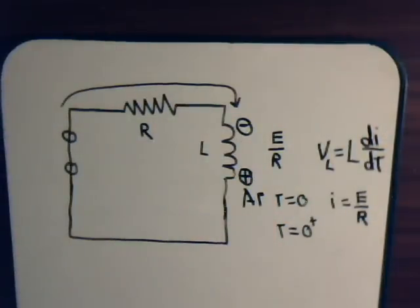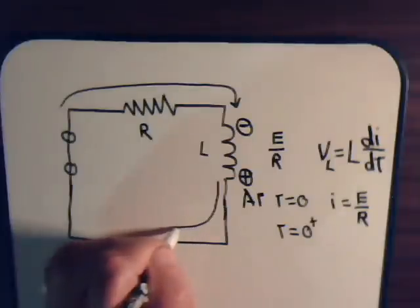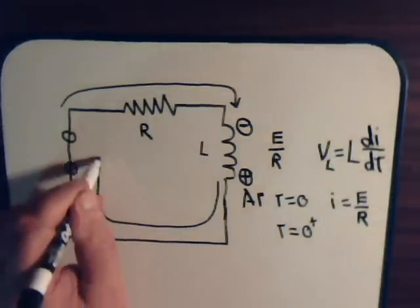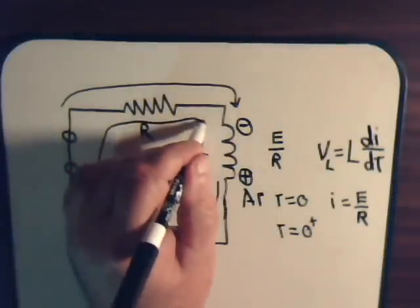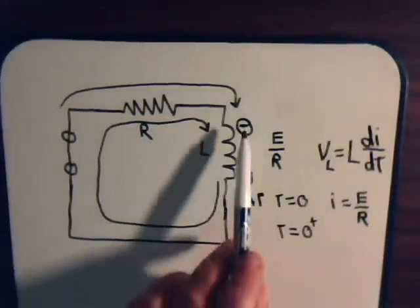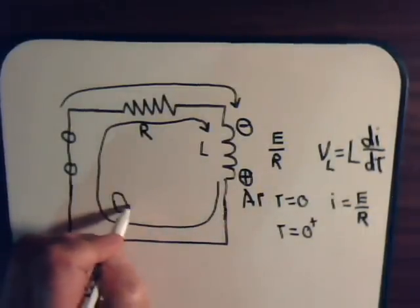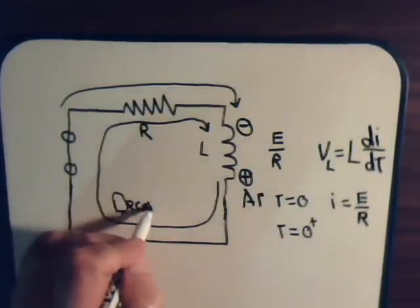This induced voltage now can act as a generating voltage. This can then drive a current across our circuit. Now eventually the magnetic field is going to totally collapse, and when it does there will no longer be an induced voltage across the coil. That means that this current here is eventually going to decay to zero. So this is the decay current.